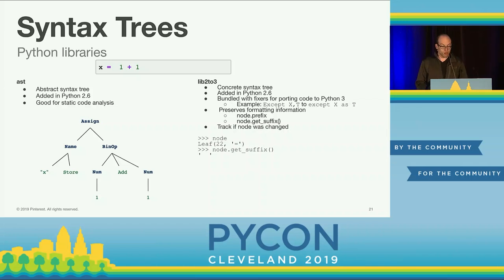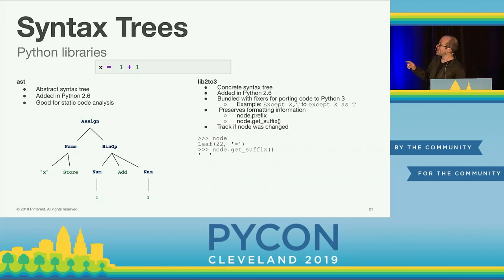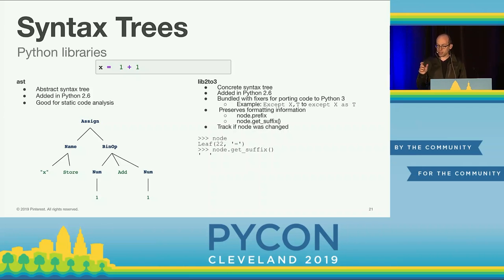Here's an example: x equals one plus one, but importantly there are actually two spaces in front of that 1. In the AST we do not preserve that information, but in lib2to3 we actually preserve it. We can see the node — the equal sign operator — and we can get its suffix, which shows that it actually has two spaces instead of one.